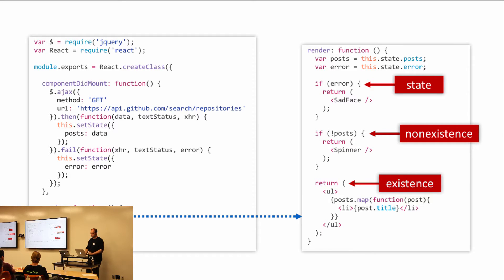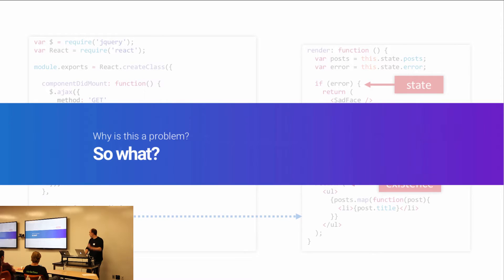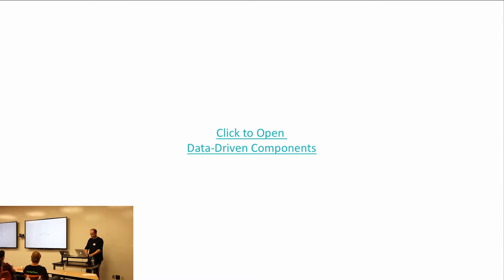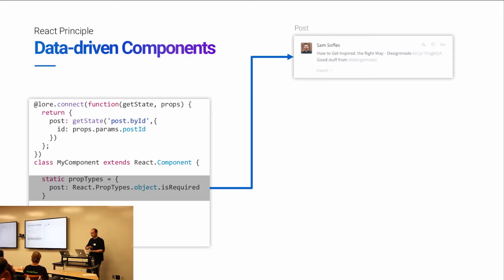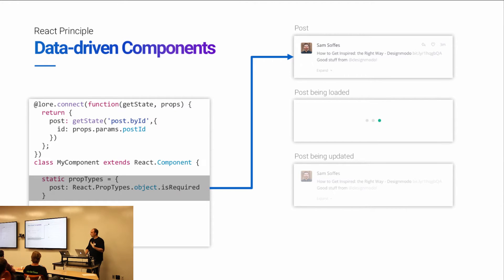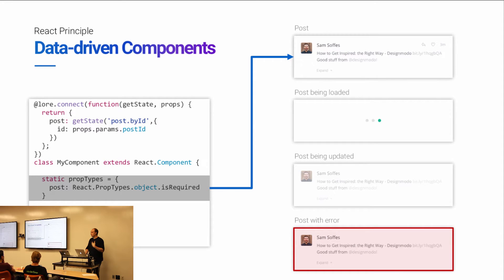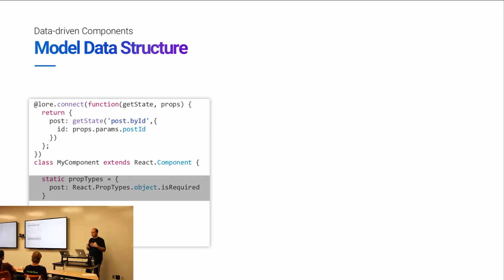So why is this a problem? The issue is that we have components that get data, and it's sometimes easy to imagine the ideal state where something displays when everything's okay. But data in an application ends up having lots of different states. Sometimes we need to know if a piece of data is being fetched or loaded, being updated to show a faded-out view, if there's an error, or if data doesn't exist on the server. This ability to infinitely express whatever's happening in our data, and simplify our components, is what this first phase of the refactor is about.